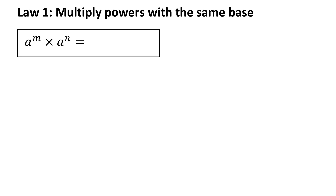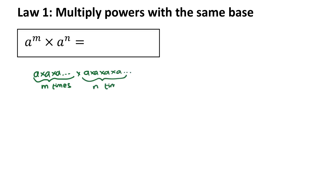The first law of exponents is about multiplying powers with the same base. So I've got the same base a, and then one factor a to the power of m, times another factor with the same base but a different exponent. If I had a times a times a, m times, multiplied by a times a times a, n times, surely it's going to be m plus n times. So the first law is a to the power of m times a to the power of n equals a to the power of m plus n.